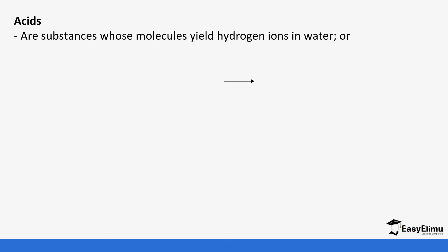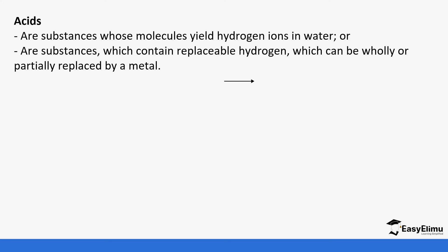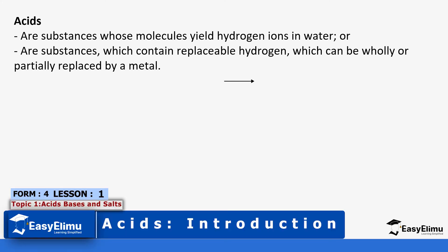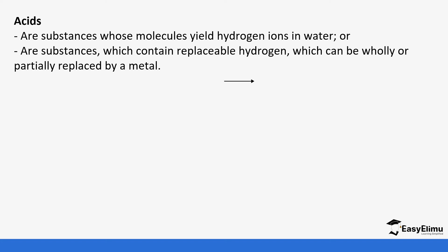Acids are substances whose molecules yield hydrogen ions in water, or they are substances that contain replaceable hydrogen which can be fully or partially replaced. If a compound has a replaceable hydrogen, it's an acid. These substances, when put in water, dissociate. This is the Arrhenius definition of an acid. For example, hydrochloric acid dissociates in water to form hydrogen ions and chloride ions.